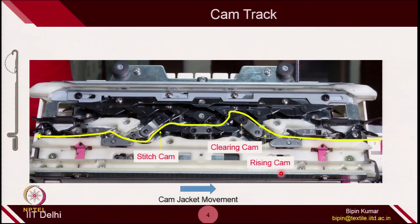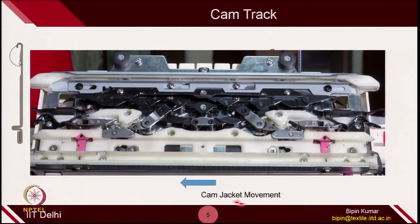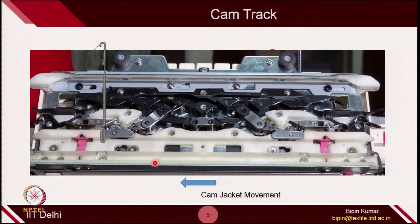If you follow the cam track from week 2, when the cam jacket moves from left to right, it will first interact with the needle from the right side. The needle will first go and then hit the rising cam, then clearing cam, then stitch cam, then up-throw cam, and finally descend from the opposite end. This is the path the needle will follow when the cam jacket moves from left to right — these are the locations of rising cam, clearing cam, and stitch cam. When you reverse the movement from right to left, the needle will come from the left side relative to the cam jacket movement.